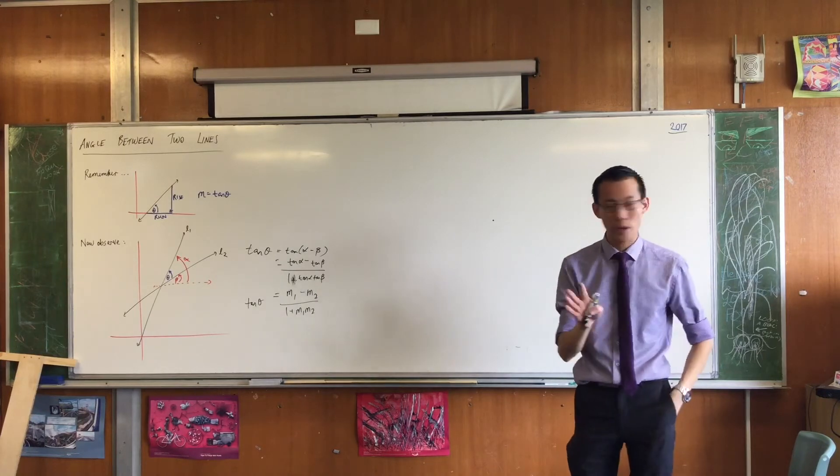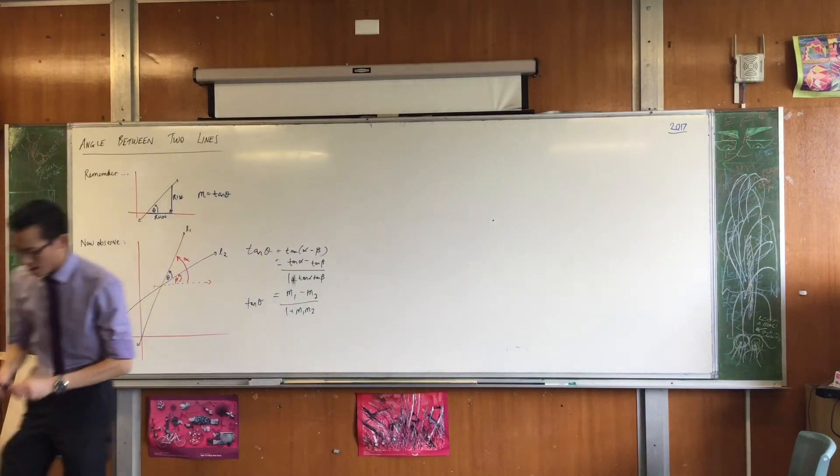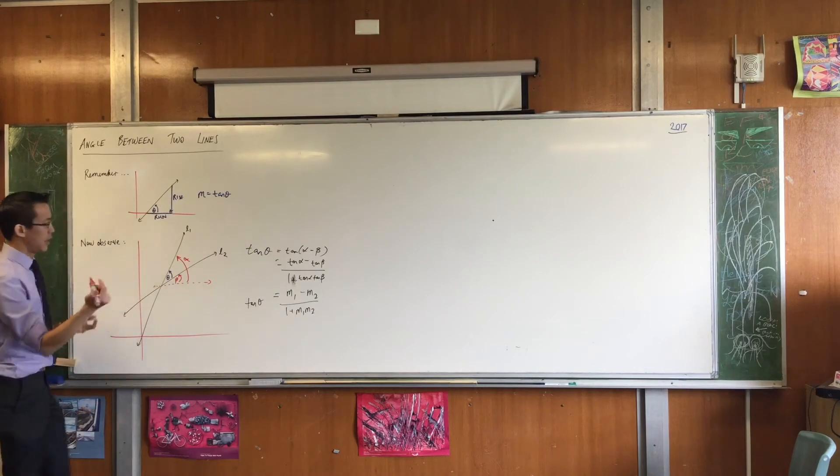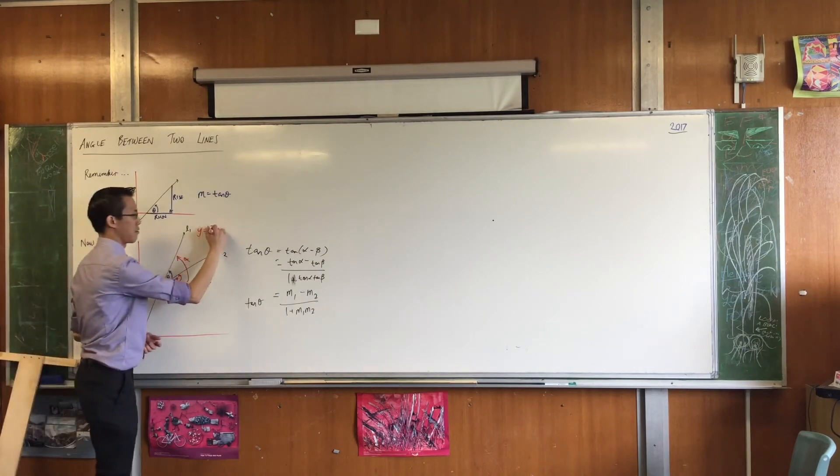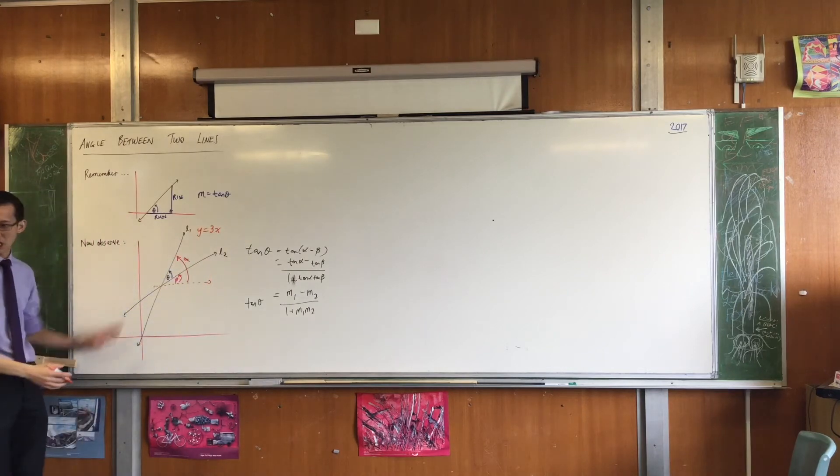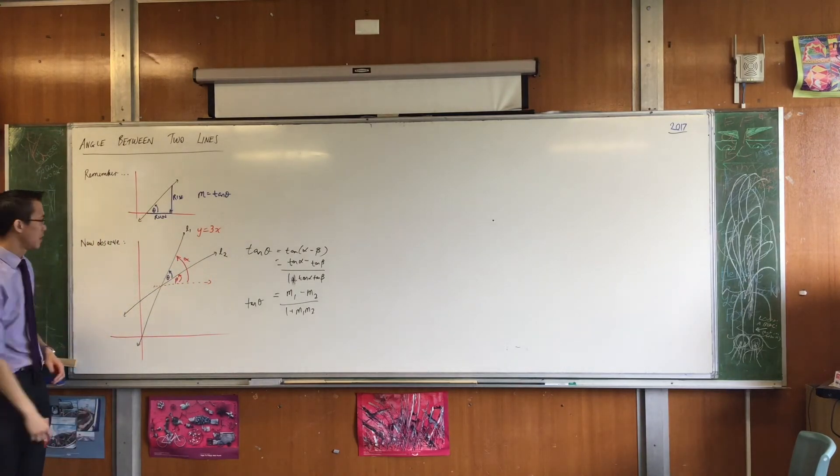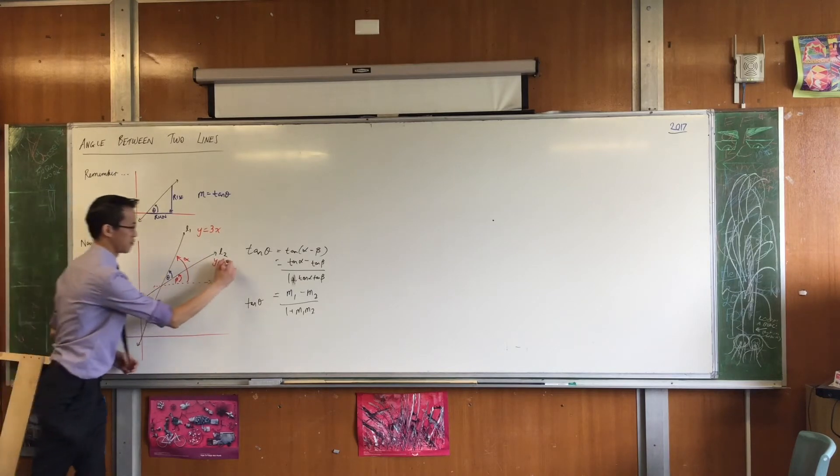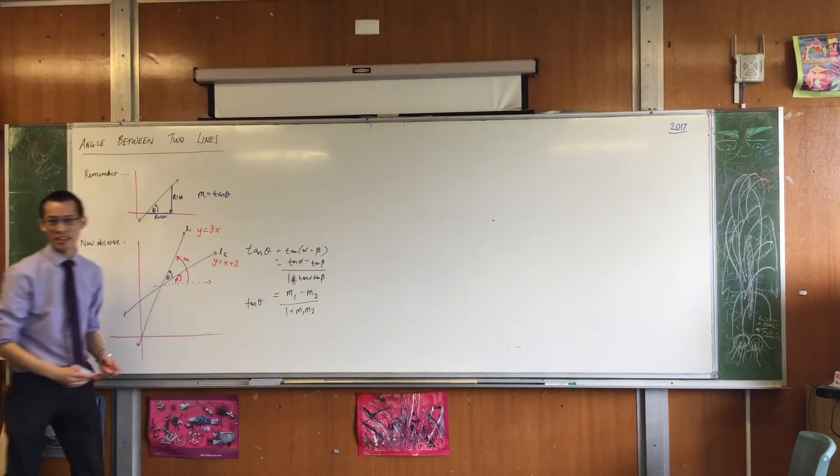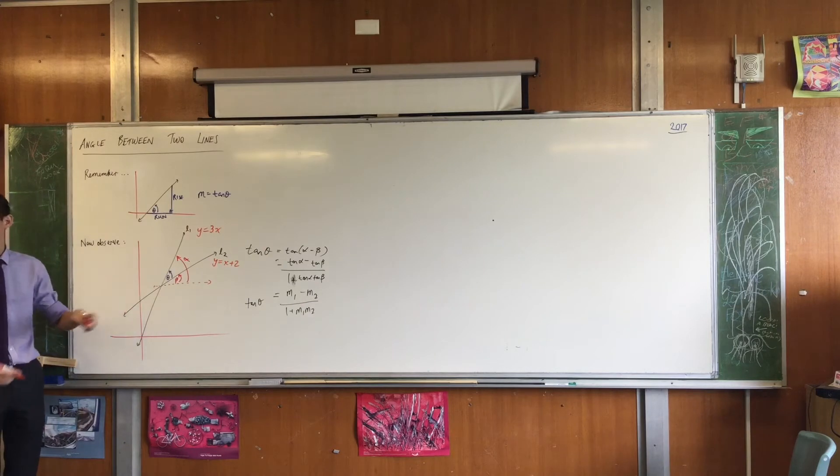Let's just give a quick example. These lines, what do they look like? Let's say, let's give us some equations. Let's call this one like y equals, I don't know, 3x. That's pretty steep, goes to the origin, okay with that. Let's keep this one pretty simple, let's call it like x plus, I don't know, x plus 2, something like that, because it doesn't start at the origin, okay?